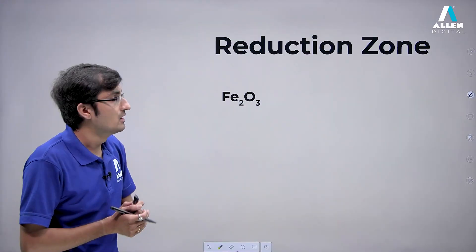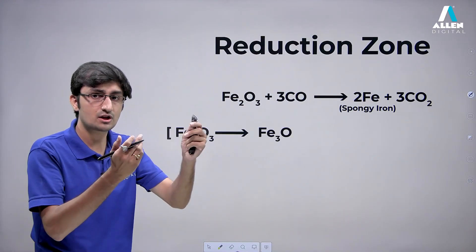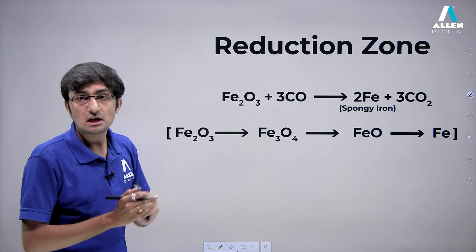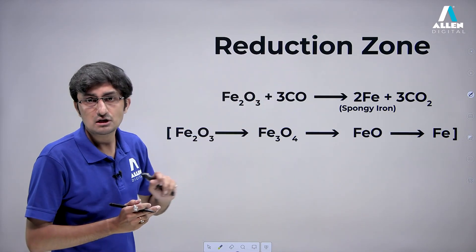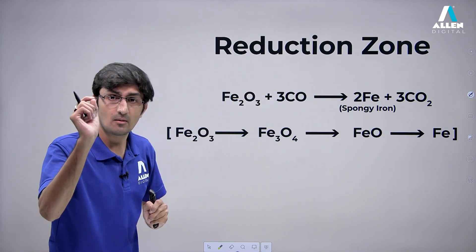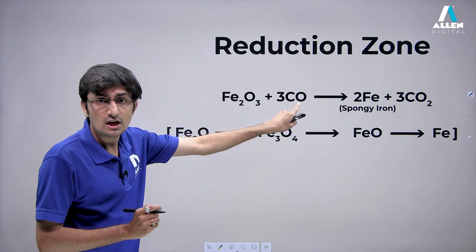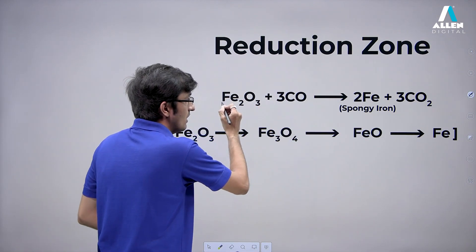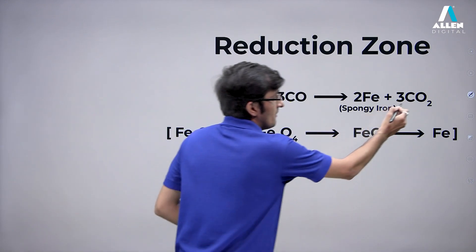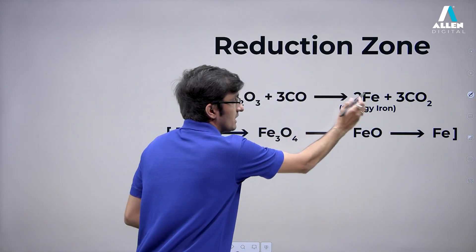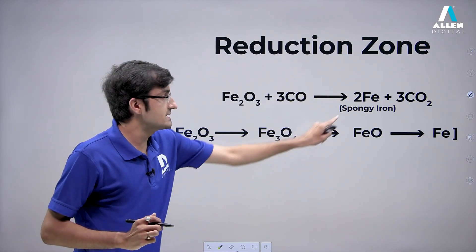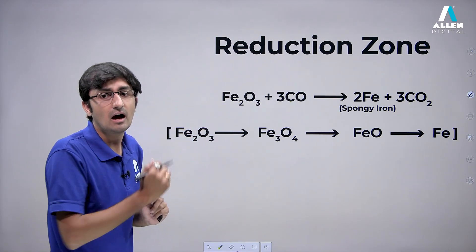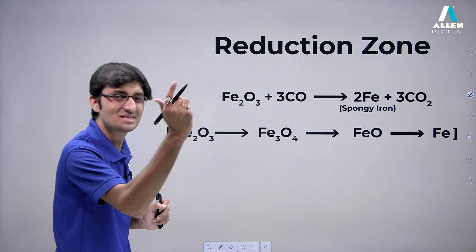Next is the reduction zone. As the name suggests, basic reduction occurs here — metal oxide is converted into metal. The CO coming up from the combustion zone acts as a reducing agent. CO acts as a reducing agent at lower temperature, which is the reduction zone at the top of the blast furnace. Fe₂O₃ combines with CO to ultimately produce Fe and CO₂. Carbon's oxidation state goes from +2 to +4. Iron oxide converts to metal — spongy iron — in molten state.